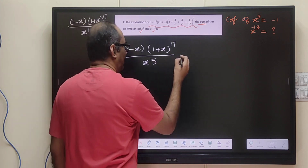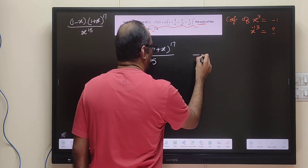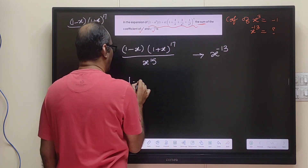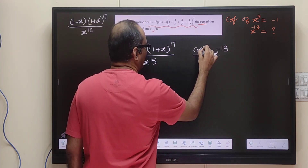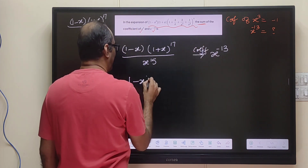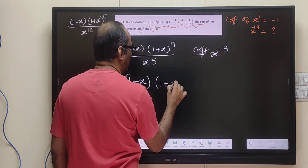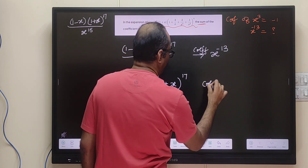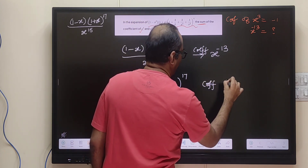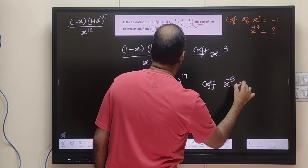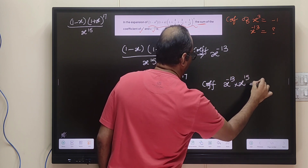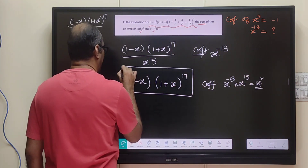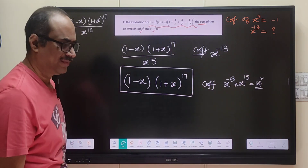In (1 minus x) into (1 plus x) to the power of 17, certainly the x squared term will be there since the power goes up to x to the power 17. Let us separate this into two parts, just as we did earlier: write it as (1 plus x) to the power 17 minus x into (1 plus x) to the power 17, and find the coefficient of x squared from each part.